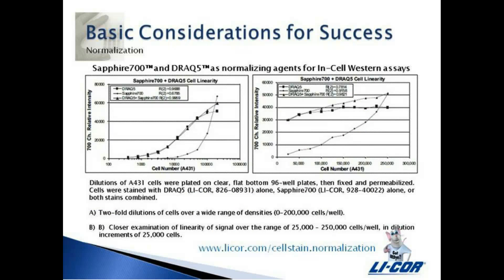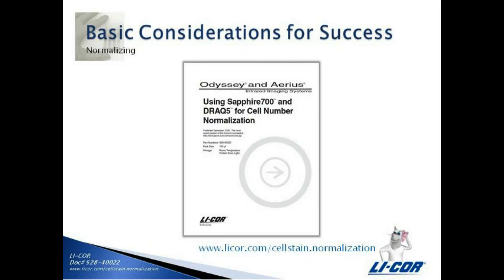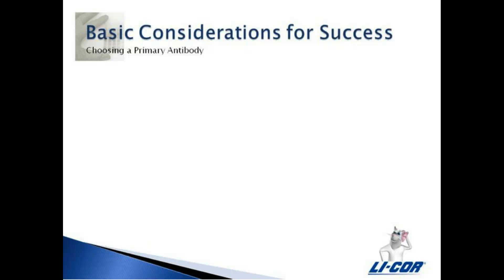The alternative, more cost-effective approach involves the use of two fluorescent cell stains in the 700 nanometer channel. Sapphire 700 and DRAQ5 are cell staining agents that can be used in combination for accurate normalization of well-to-well variation in cell number over a broad range of cell densities. More information on normalizing with these cell stains can be found in the document using Sapphire 700 and DRAQ5 for cell number normalization at www.licor.com/cellstain.normalization.